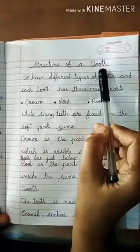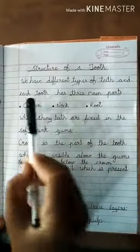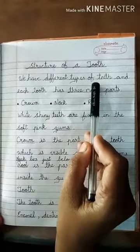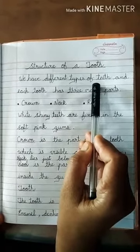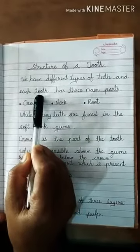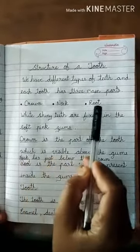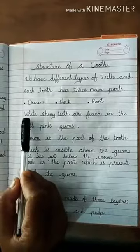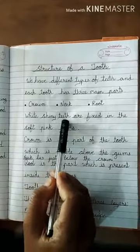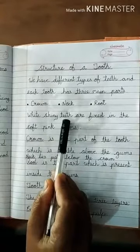Now, the structure of a tooth. Each tooth has 3 main parts. We have studied the different types of teeth — incisors, canines, molars, and premolars. Now we will study about a single tooth. The 3 main parts are crown, neck, and root. White, shiny teeth are fixed in the soft pink gums.